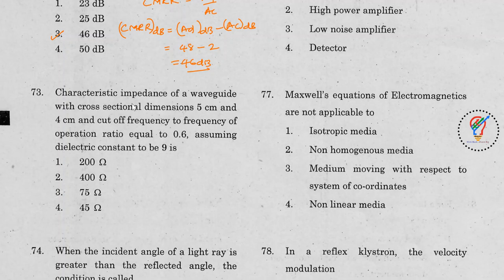ZC equals the intrinsic impedance eta divided by the square root of (1 minus (fc/f)²). The value of fc/f is 0.6, so we need to find eta.